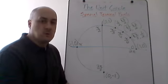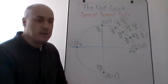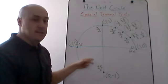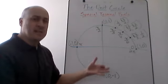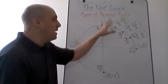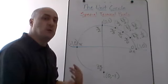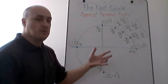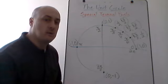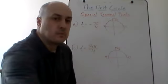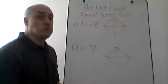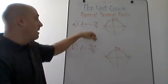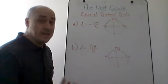Now I'm going to do a couple quick examples where we find terminal points for related points in the other quadrants. As we do these, I'll keep going back to the trig hand. So if you didn't quite get it here, keep watching — I'll keep coming back to the trig hand every time we need it, and when you see it enough times, you'll start to get the hang of how it works.